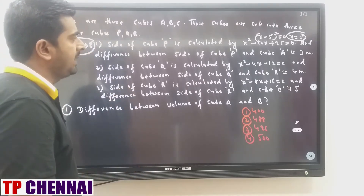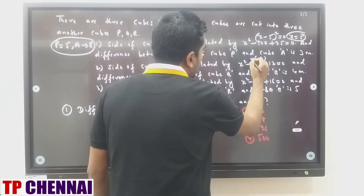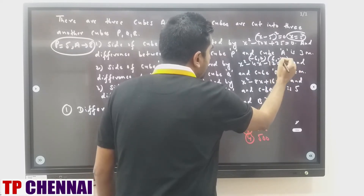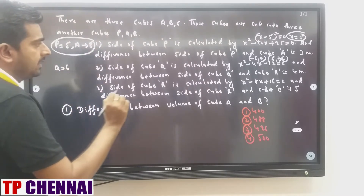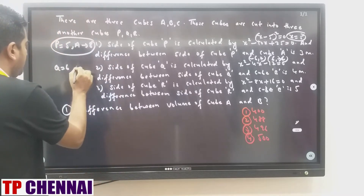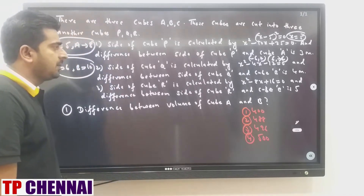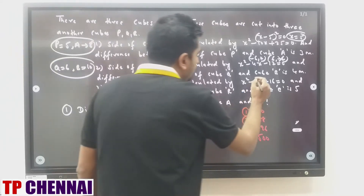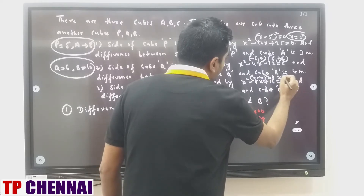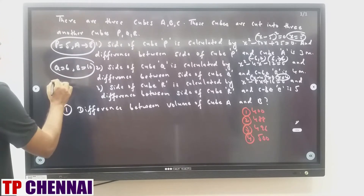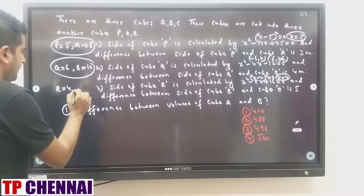Side of cube Q from X² minus 4X minus 12 = 0 gives roots minus 6 and 2, so final value Q = 6 (negative rejected). B is 4 meters more, so B = 10. Third condition: side of cube R from X² minus 8X plus 16 = 0, which is (X minus 4)² = 0, so X = 4, meaning R = 4. C is 5 more, so C = 9.